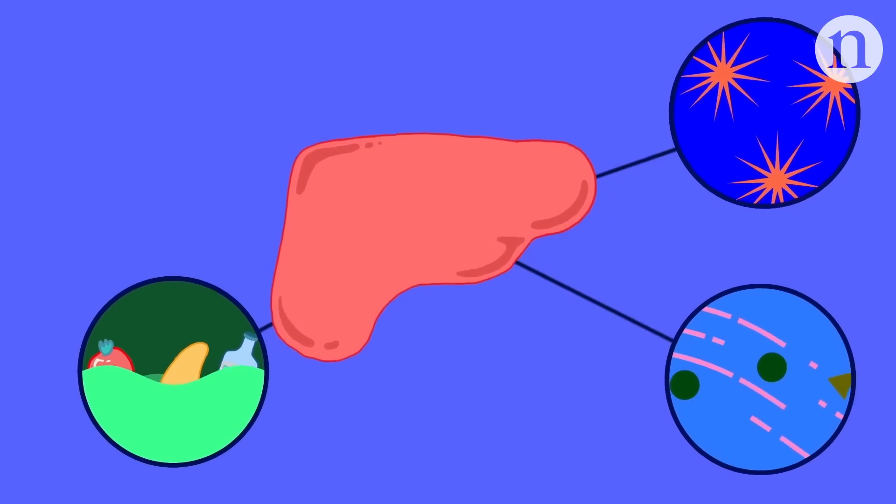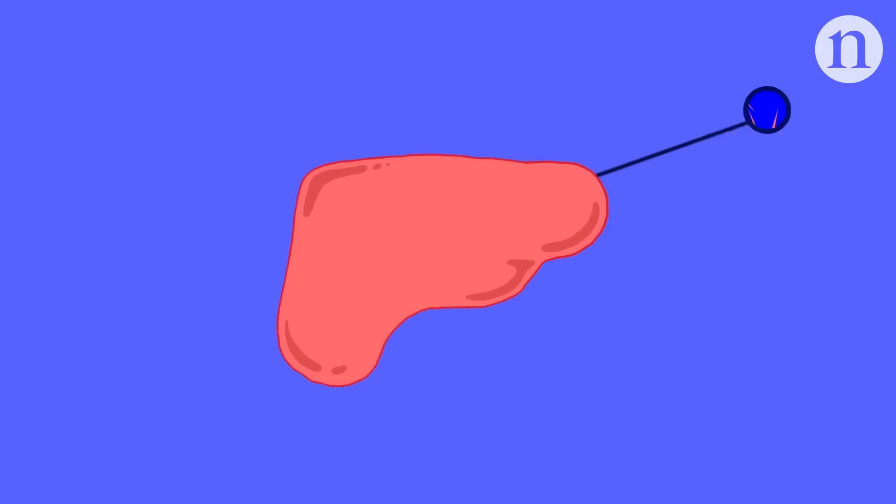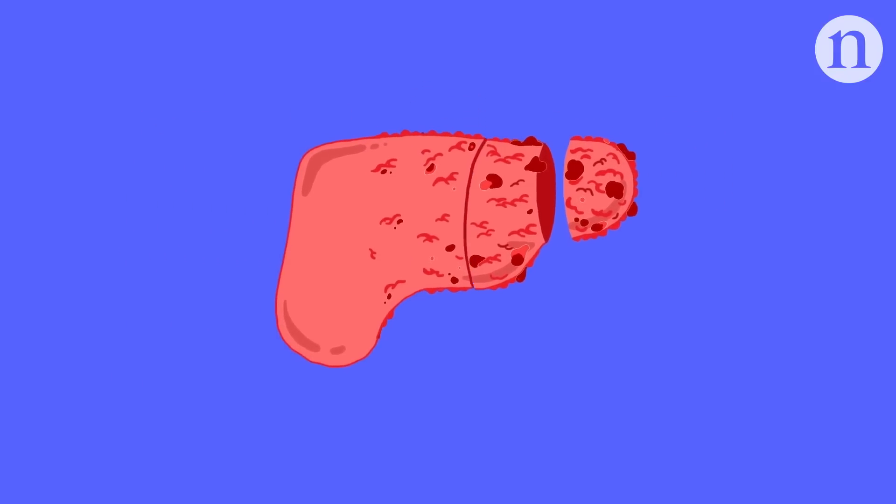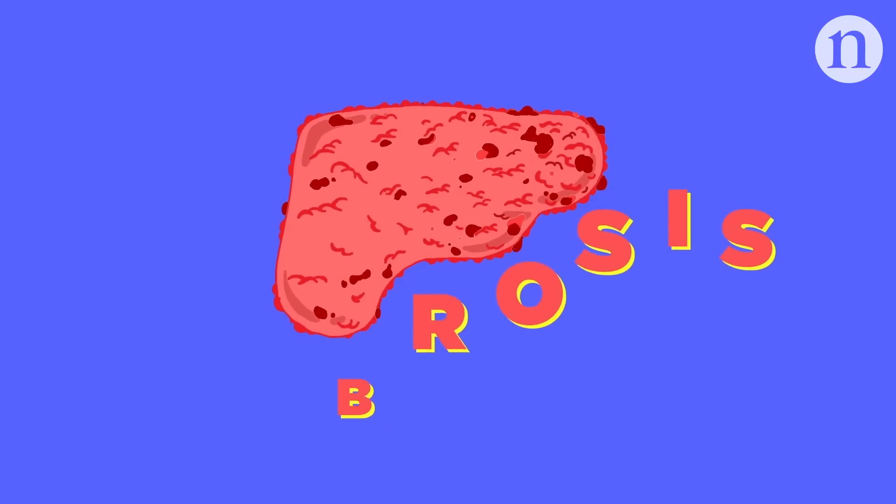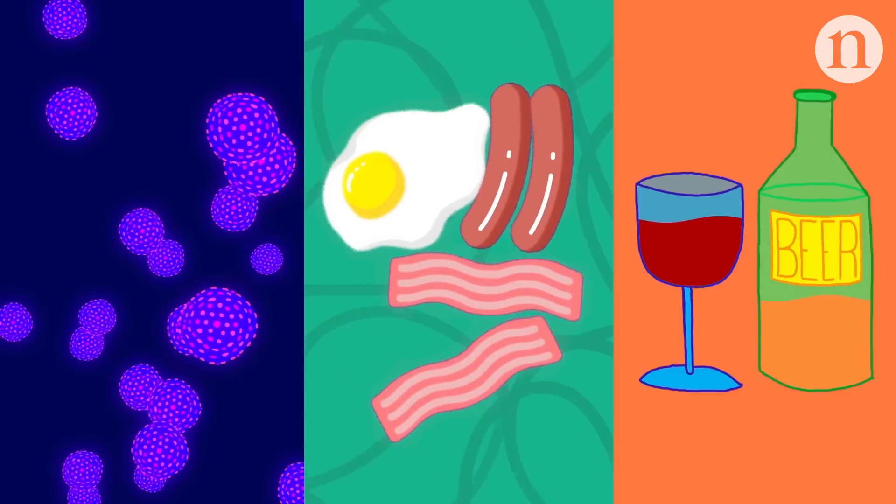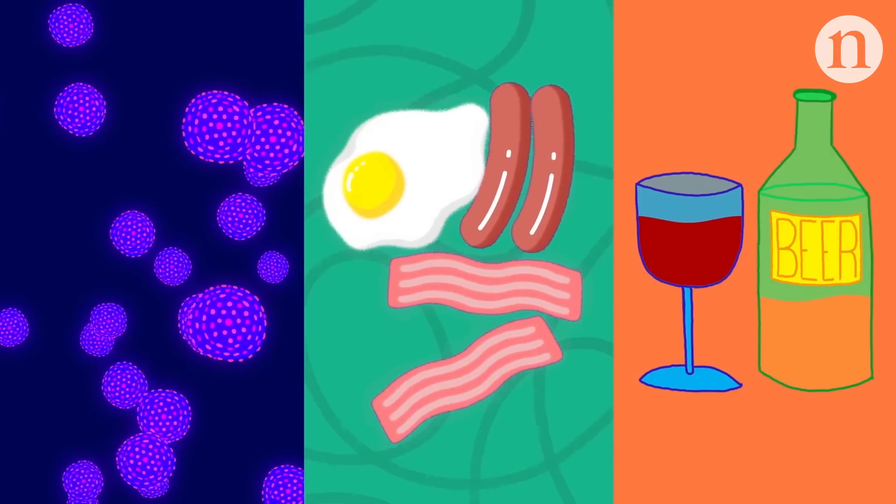Unfortunately, numerous chronic diseases damage the liver, and when they continue for a long time they cause scarring, a condition called fibrosis. The most common causes are hepatitis viruses, long-term heavy drinking, and fatty liver disease associated with obesity and diabetes.